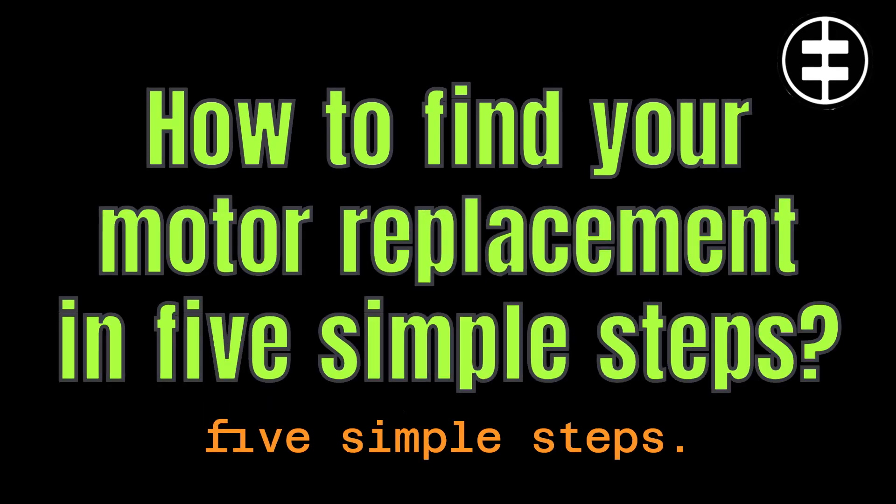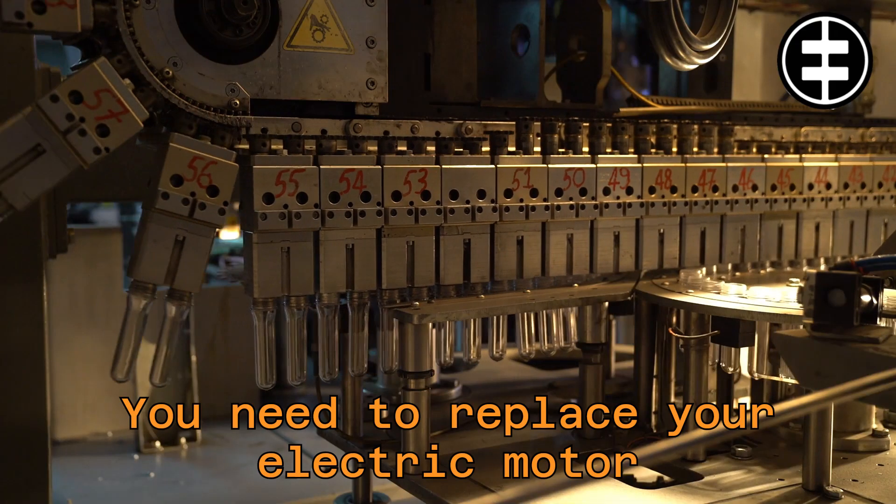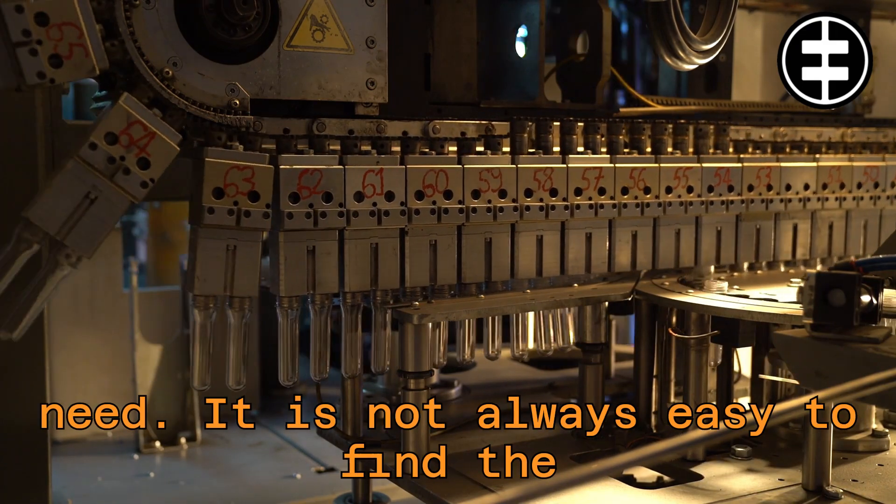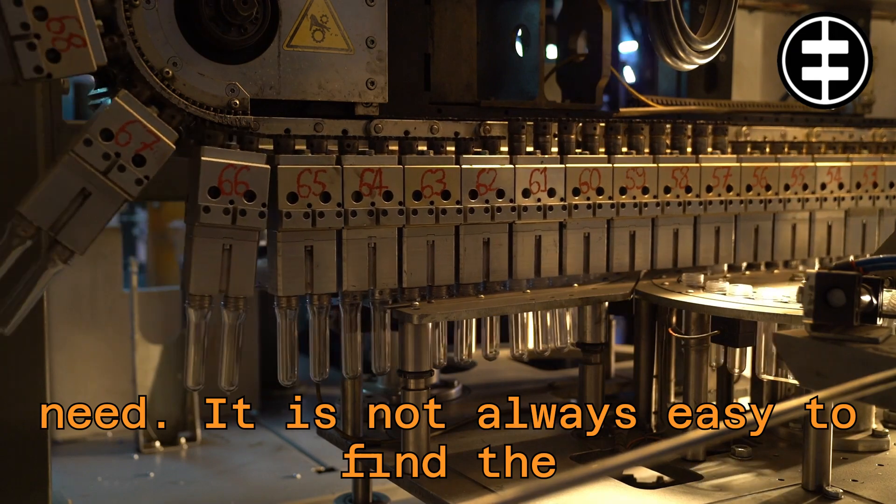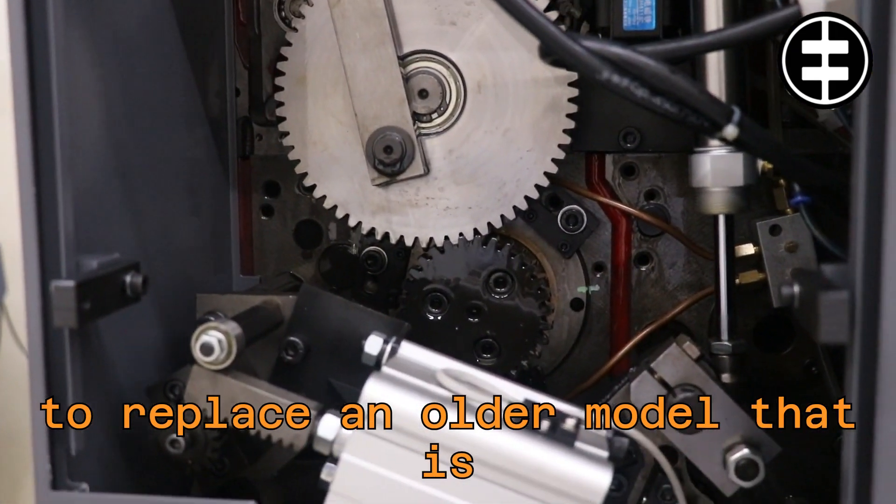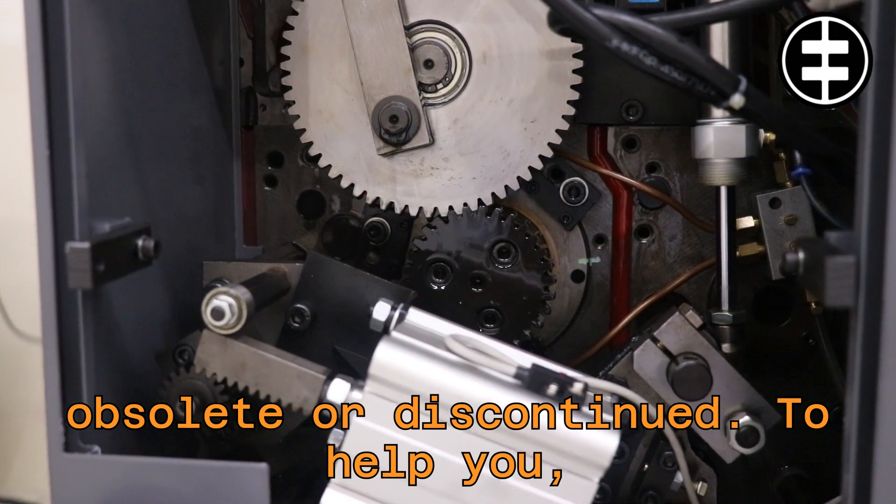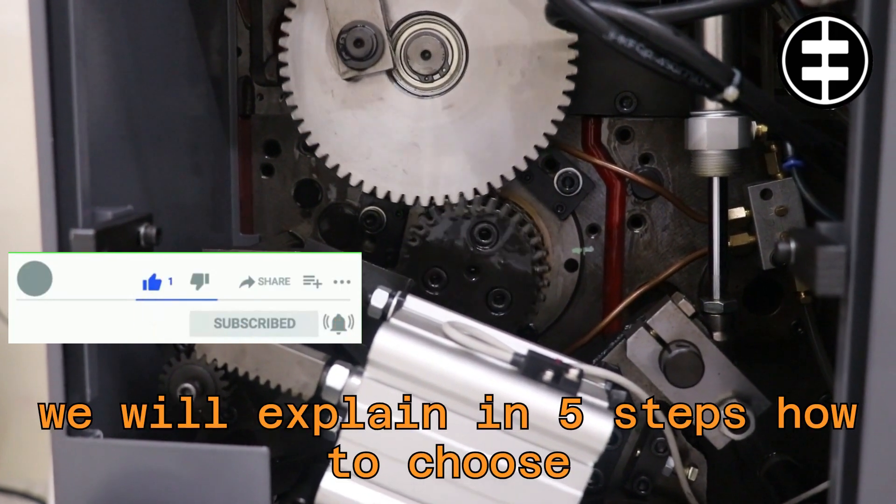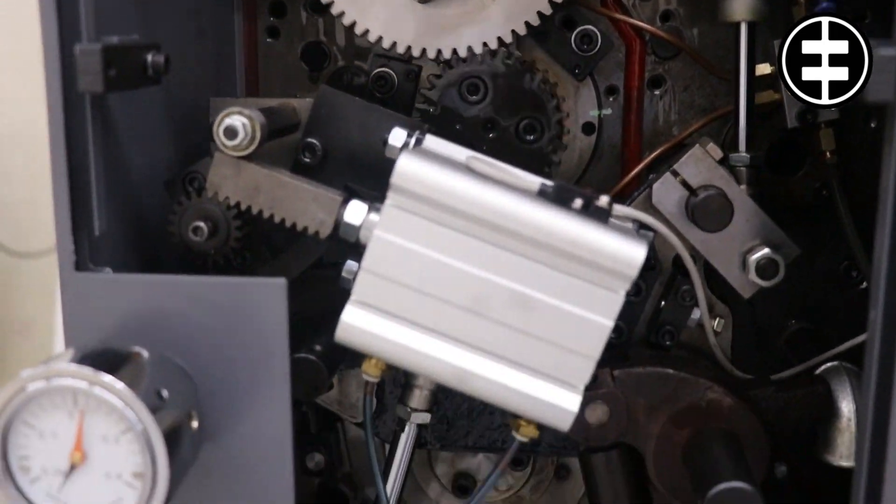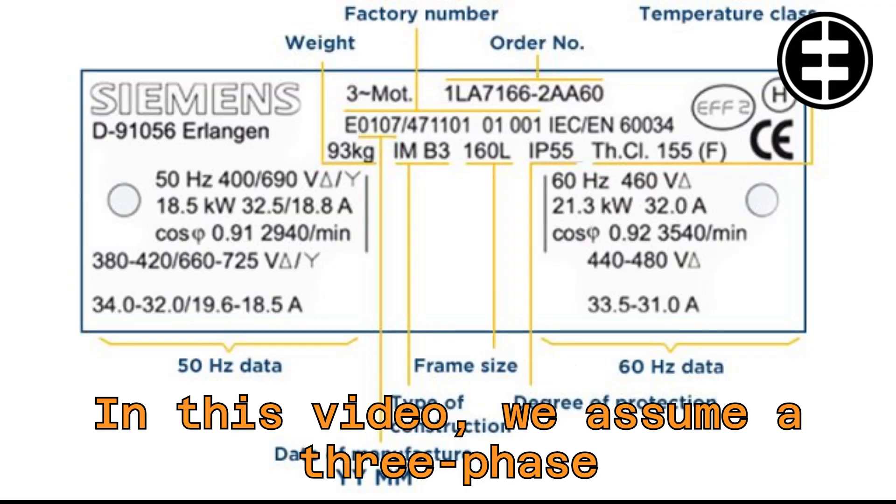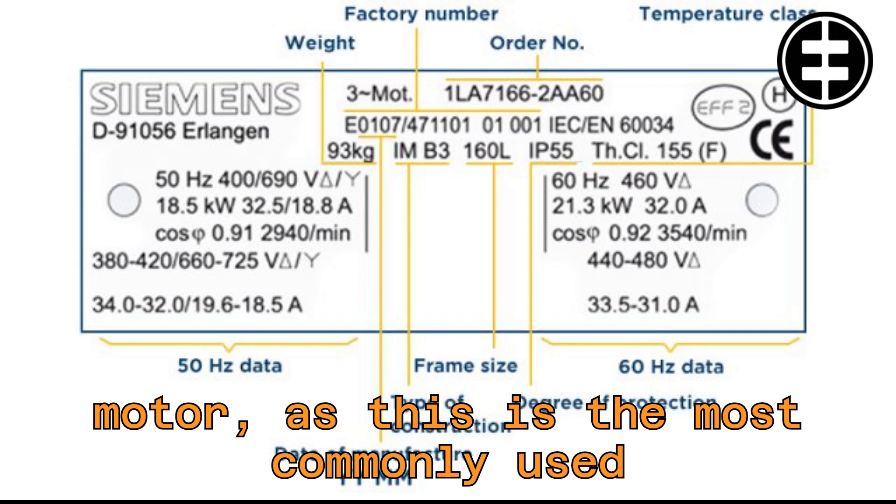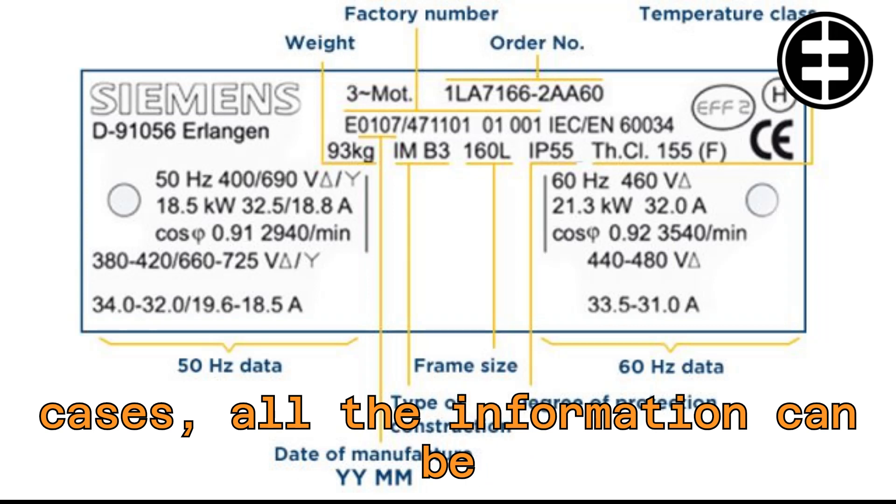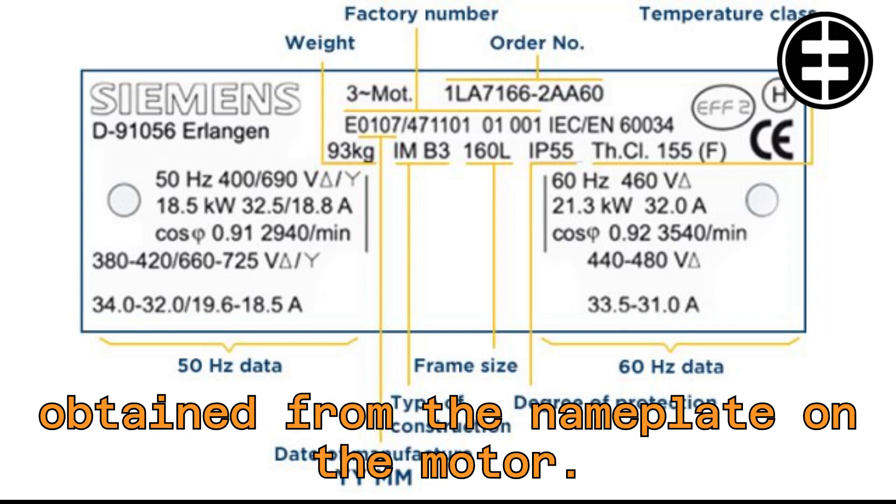How to find your motor replacement in five simple steps. You need to replace your electric motor and want to know which electric motor you need. It is not always easy to find the correct replacement motor. You might need to replace an older model that is obsolete or discontinued. To help you, we will explain in five steps how to choose the right electric motor. In this video, we assume a three-phase motor as this is the most commonly used type of electric motor. In many cases, all the information can be obtained from the nameplate on the motor.